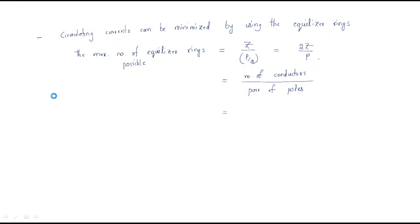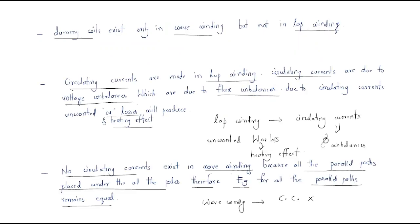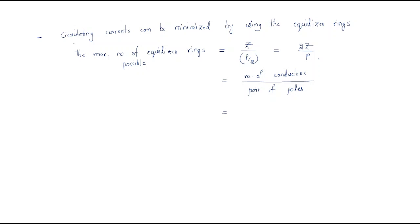Hello everyone. In the last session we discussed some points regarding lap winding and wave winding. We discussed that in lap winding only we have circulating currents, and in wave winding we don't have any circulating currents.